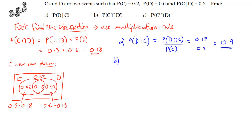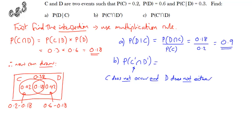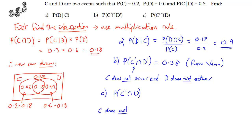For part B: the intersection of not C with not D. Not C means C doesn't occur, and not D means D doesn't occur either. The only bit of the diagram that corresponds to is 0.38, so we can read that straight from the Venn diagram. Part C is similar: the intersection of not C with D — C doesn't occur but D does — that's 0.42, the only part outside C but inside D.